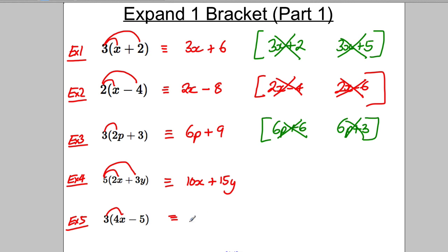And the last one. So we're going to do 3 multiplied by positive 4x, which is positive 12x. And 3 multiplied by negative 5, which is negative 15.